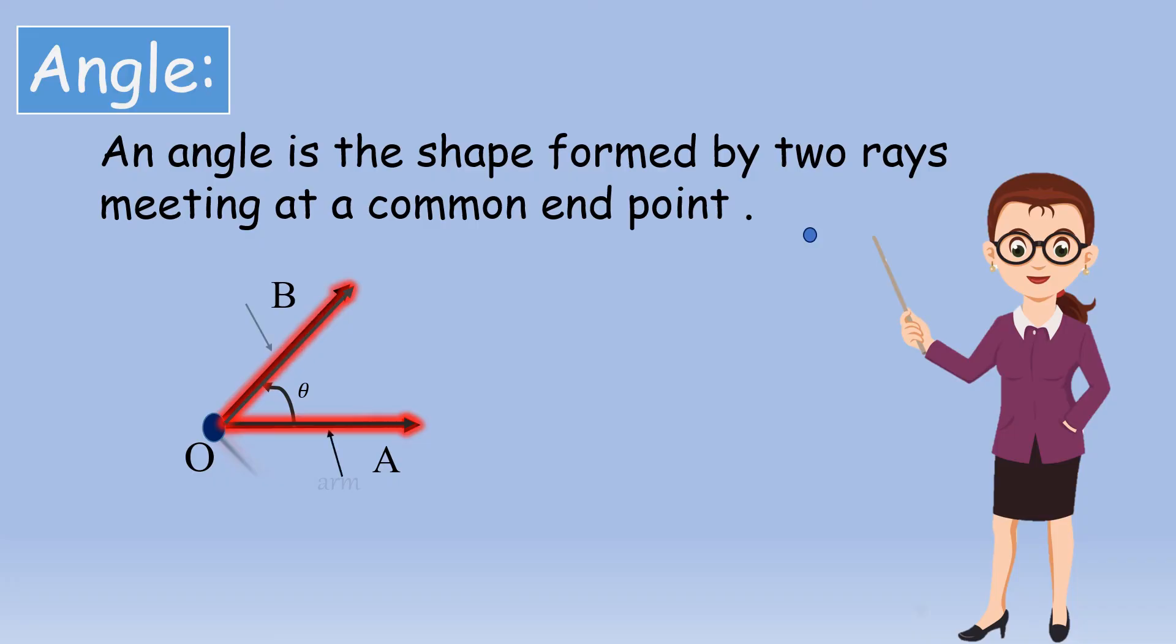Here, OA and OB are called the arms of the angle. And the common meeting point, O, is called the vertex.